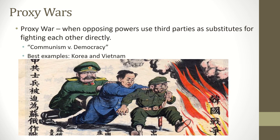The second form that containment would take is proxy wars — when opposing powers use third-party countries to fight for them. Two great examples of proxy wars are going to be Korea and Vietnam.